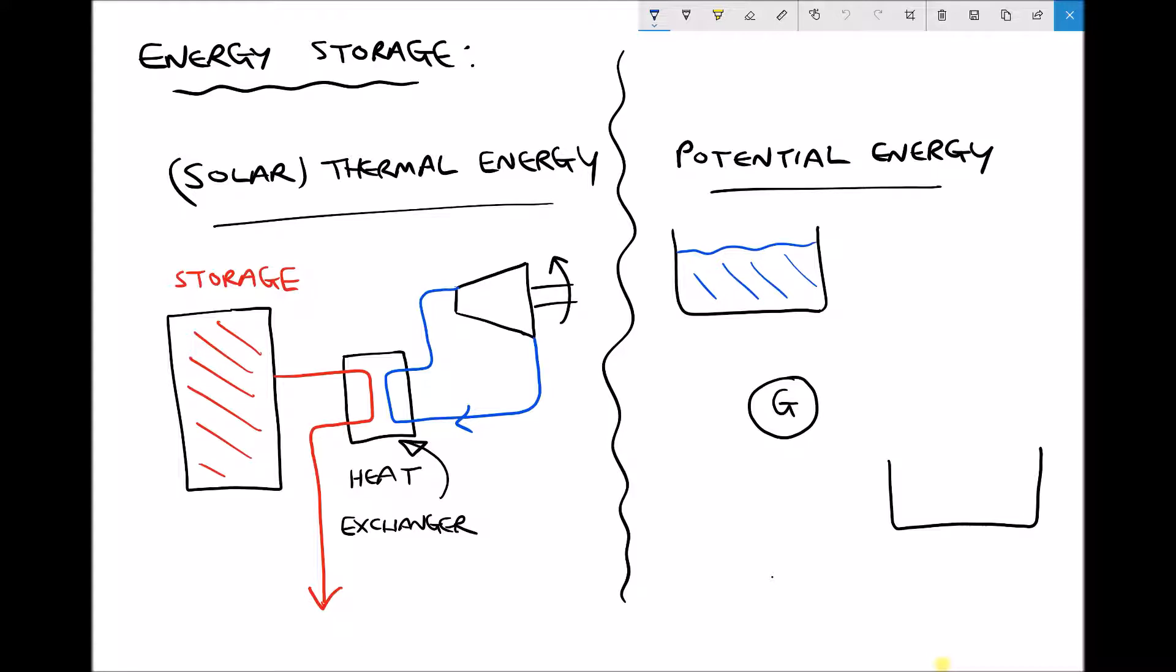Now in the video on solar thermal energy we saw how mirrors were used to direct the sun's energy to a specific point and that point was used to heat the fluid. Now that heated fluid could be stored and could be used to provide energy on demand.